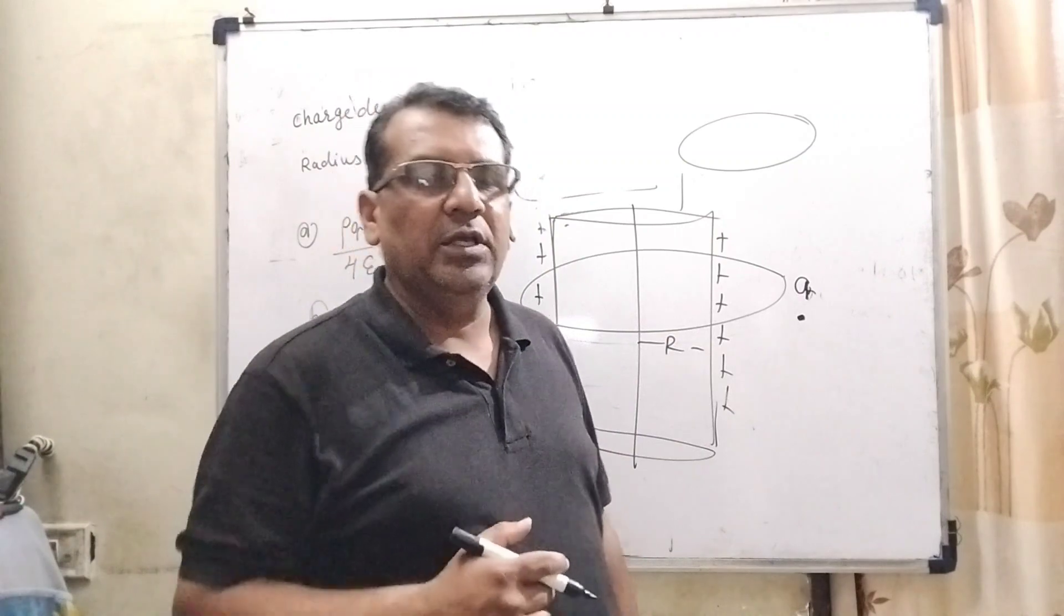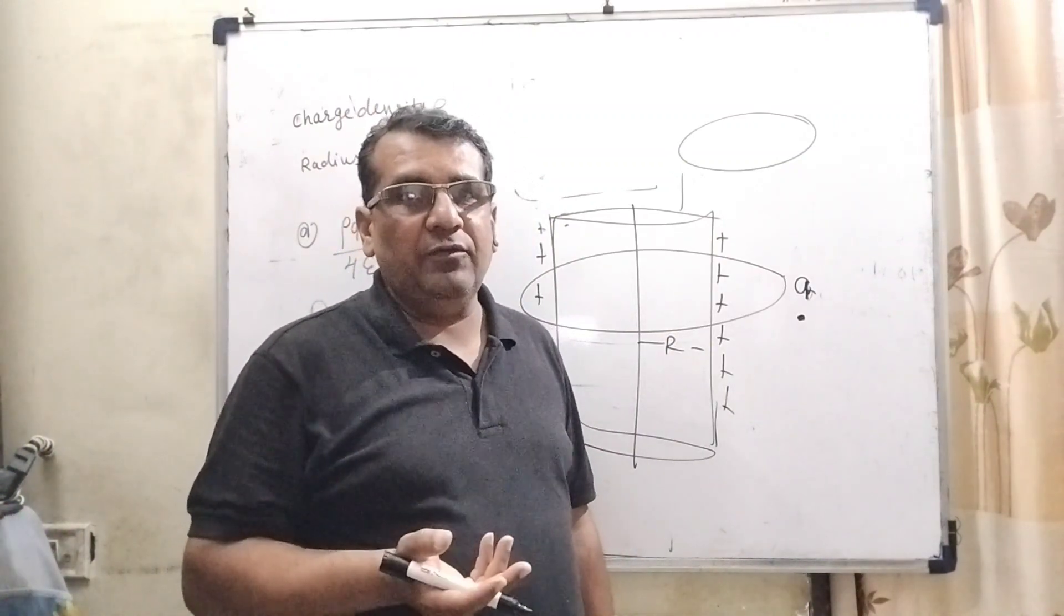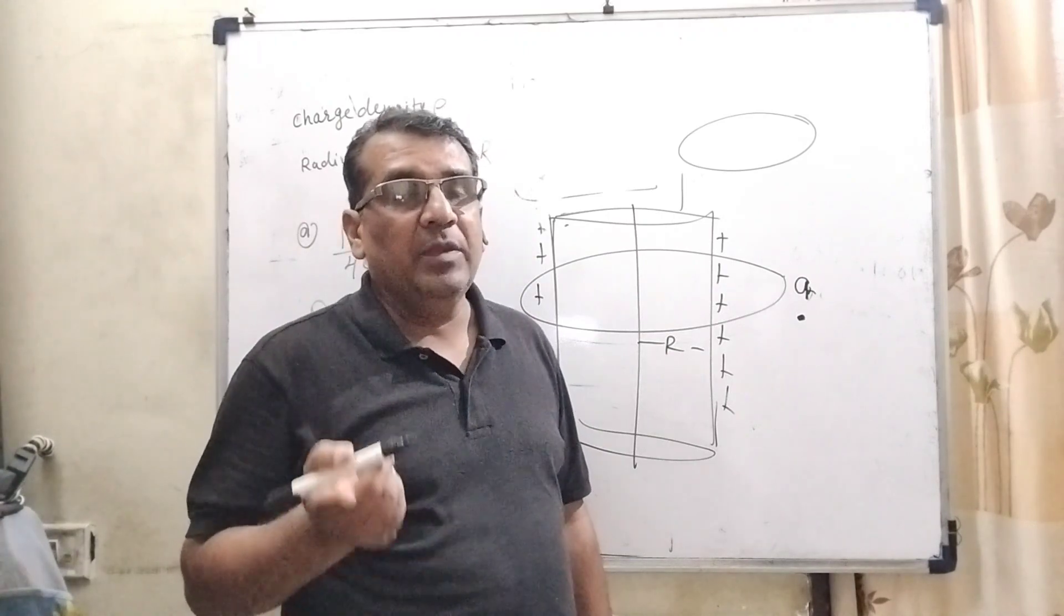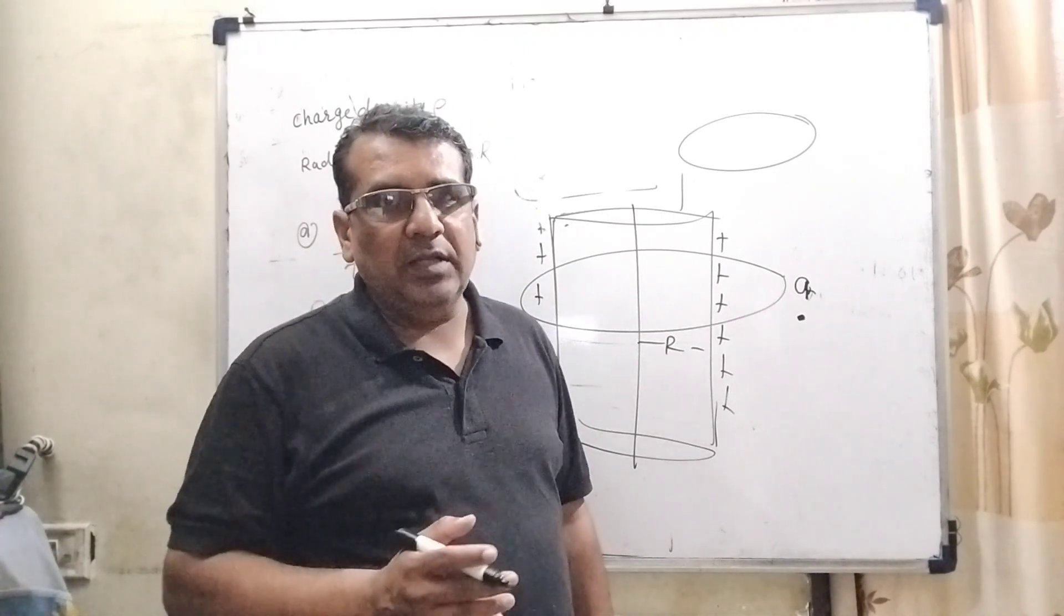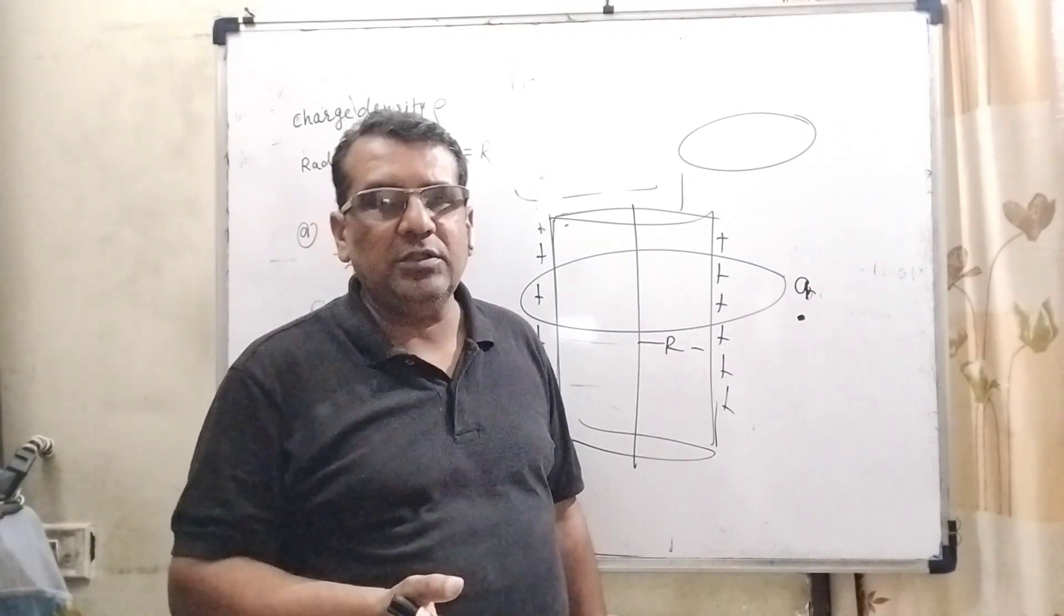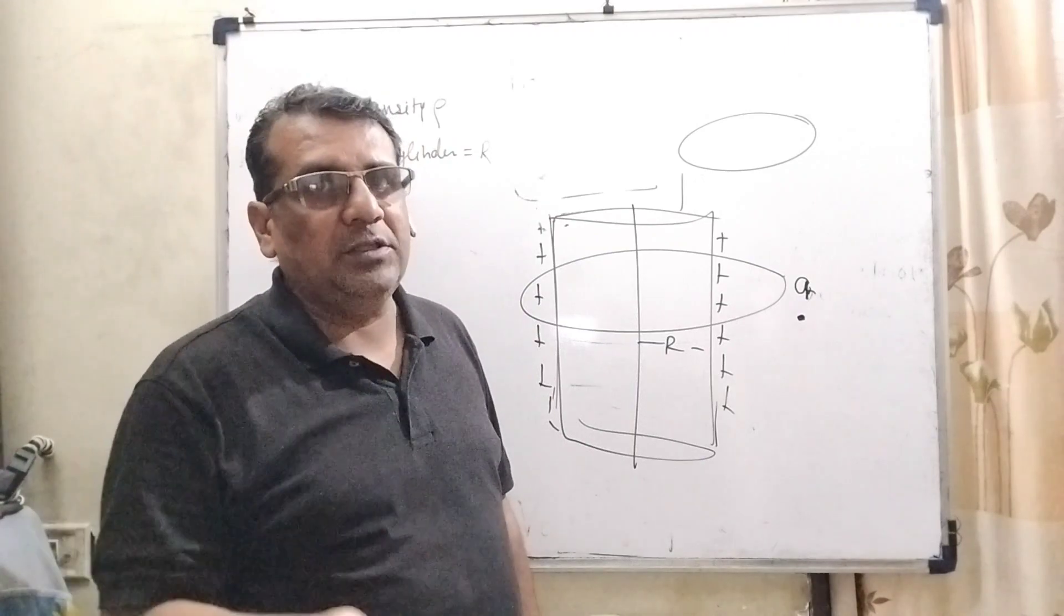Moon revolves around the earth. Why? Because of gravitational force. So gravitational force equals centripetal force. Any object moving in a circular path due to frictional force - the frictional force equals the centripetal force. Centripetal force is obtained from other forces.